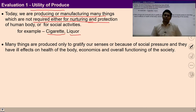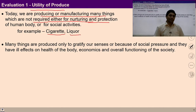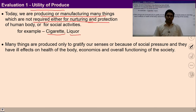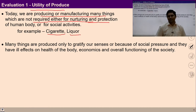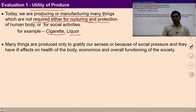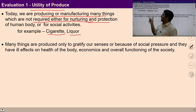Before production there should be a clarity of need. If we are not clear about our need, if we don't have a feeling of prosperity, then we may start producing things which actually harm the body of human beings and do damage in the society. Examples like cigarette, liquor, tobacco — we have to evaluate all production processes in terms of utility of produce.